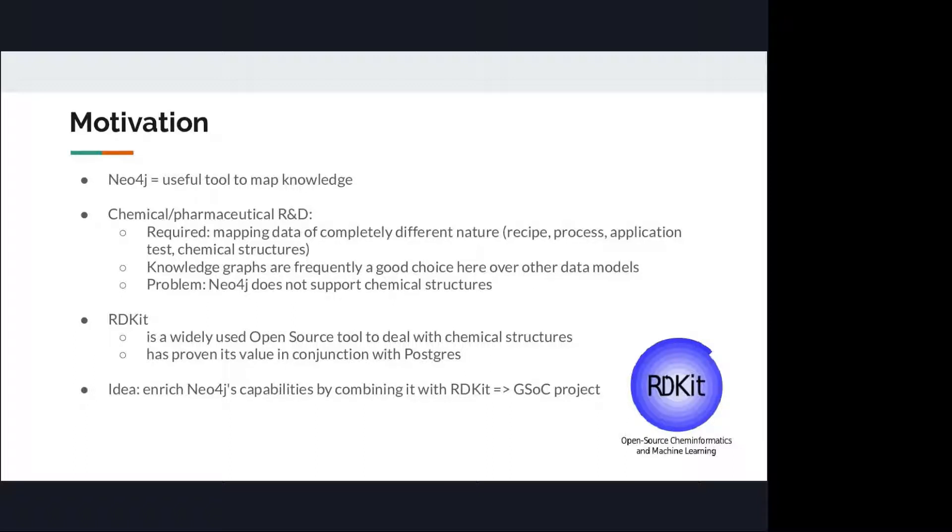RDKit is an open source library tool, worldwide used by chemists, that can deal with chemical structures. Actually, it already has proven its value in conjunction with Postgres. It is already possible to work the same way with chemical structures in Postgres, but now we are able to do it in Neo4j.